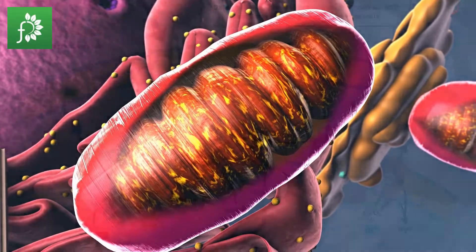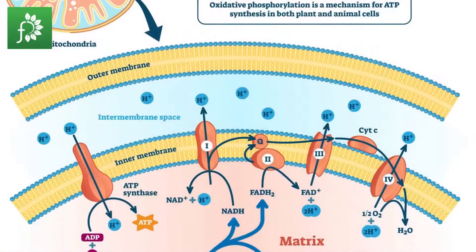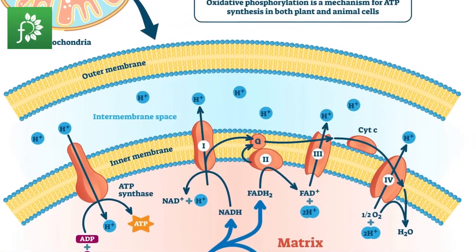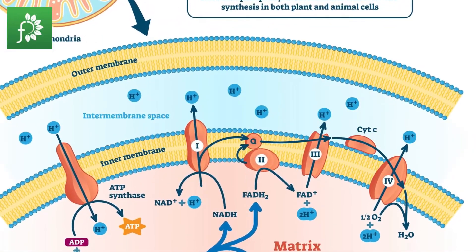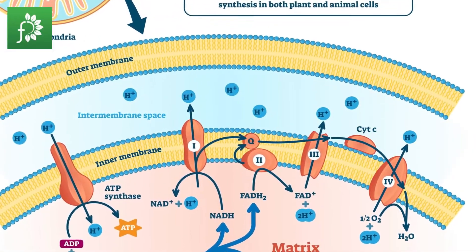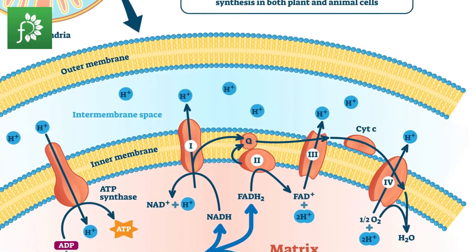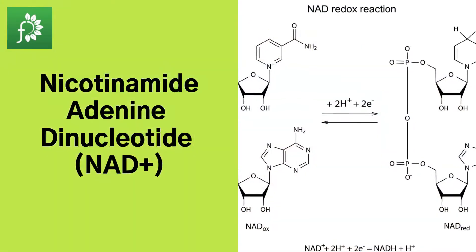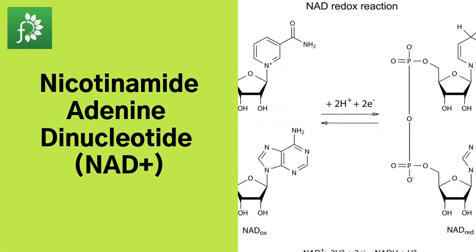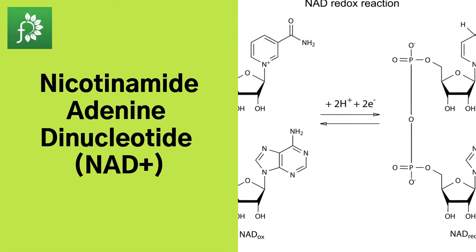ATP is generated at the inner membrane of mitochondria by an efficient mechanism called oxidative phosphorylation, involving several membrane protein complexes.